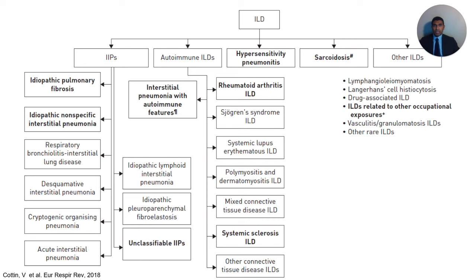ILD is a broad category consisting of 100-plus different diseases. Interstitial lung diseases can be categorized into five main categories: idiopathic interstitial pneumonias, autoimmune interstitial lung diseases, hypersensitivity pneumonitis, other exposure-related interstitial lung diseases, sarcoidosis, and other rare forms such as cystic lung diseases, vasculitis, eosinophilic pneumonias, and pulmonary alveolar proteinosis. Today's presentation will focus on autoimmune-related interstitial lung diseases.